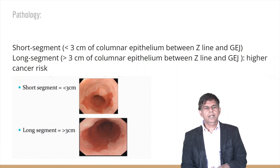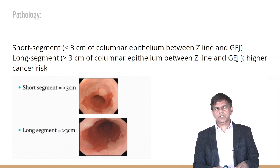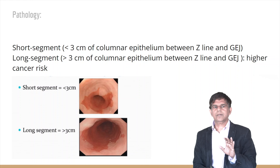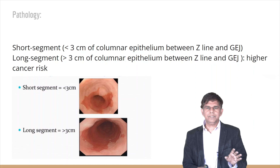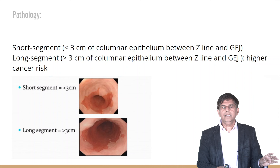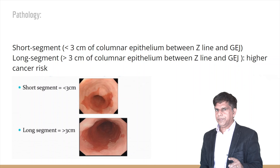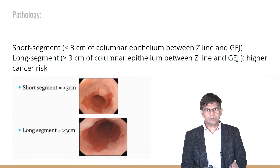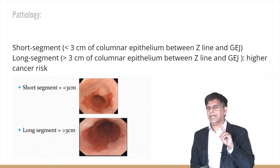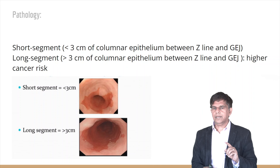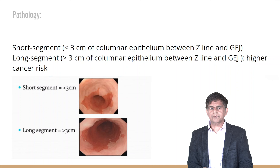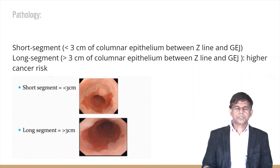There is a physiological transformation at the Z-line — the boundary between squamous and columnar epithelium — which shifts upward. Two important terms: short segment refers to less than three centimeters of columnar epithelium between the Z-line and the gastroesophageal junction. Long segment is greater than three centimeters, and carries a higher cancer risk.